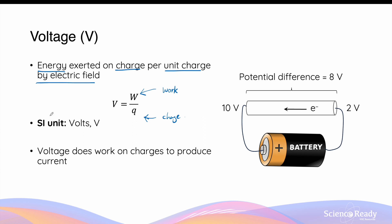The SI unit for voltage is simple to remember — it is simply volts, represented by the capital letter V. Typically in an electric circuit, we produce voltage or a potential difference by using a battery.